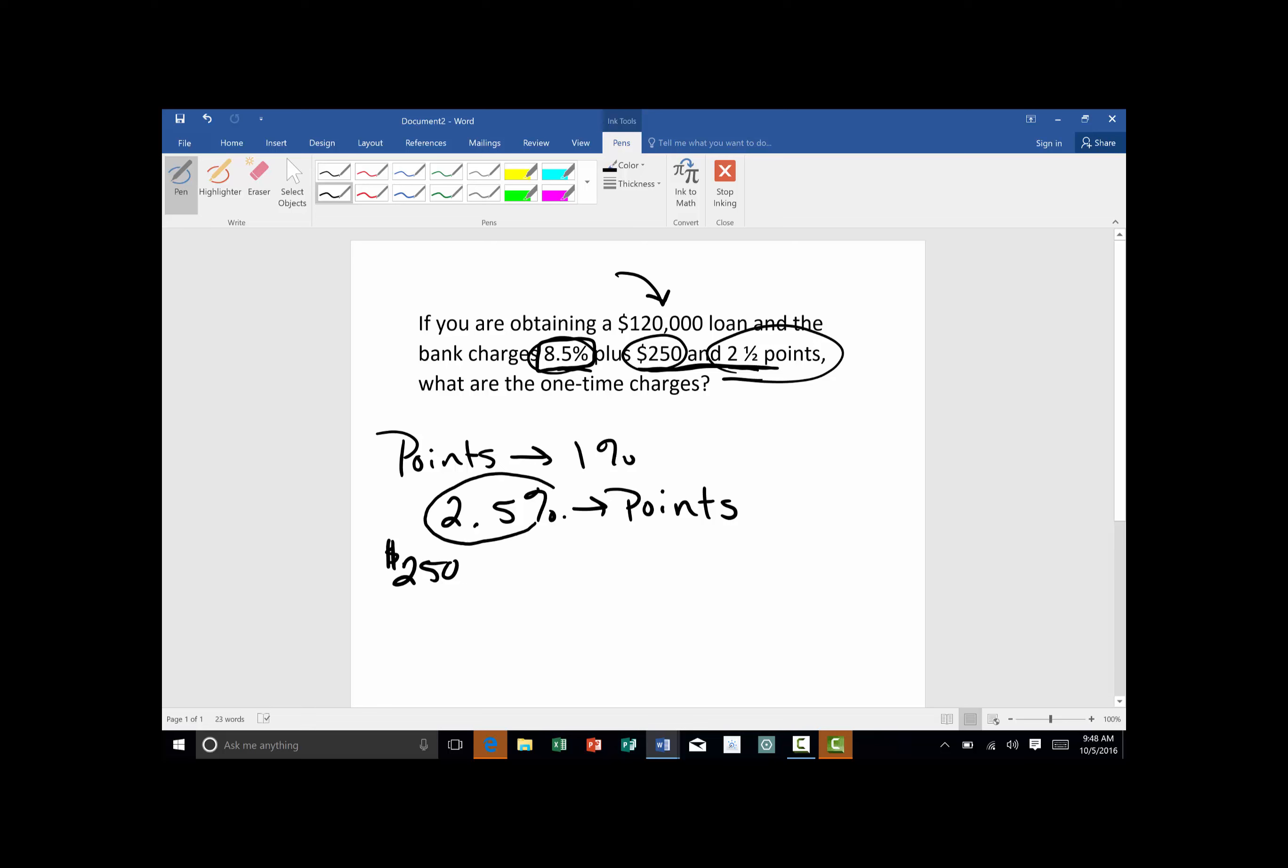And if you're doing 2.5%, so 2.5% of $120,000, you do just like when you did the down payment. You do $120,000 times 0.025.